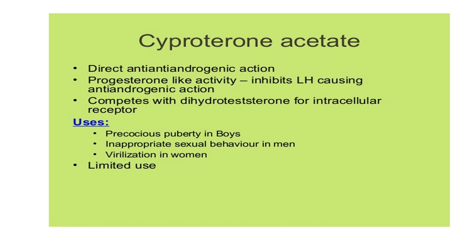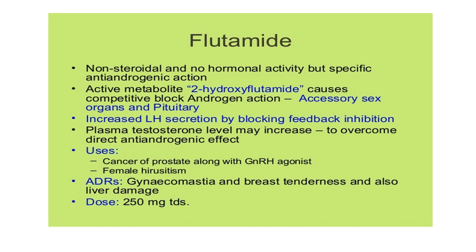The uses of cyproterone acetate include precocious puberty in boys, inappropriate sexual behavior in men, and virilization in women. These are conditions requiring anti-androgenic effects. Precocious puberty means early occurrence of puberty in boys. It has very limited and rare clinical use.